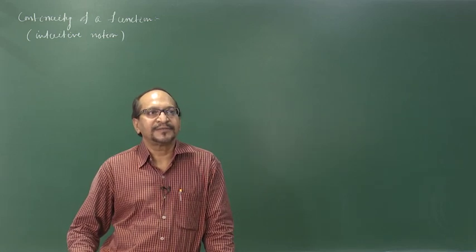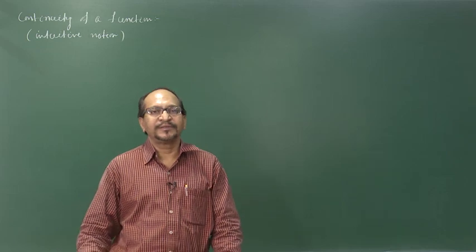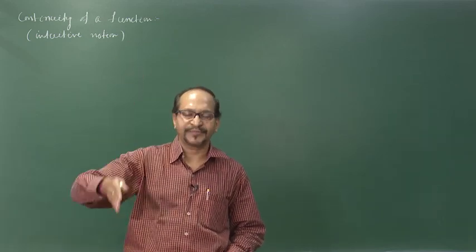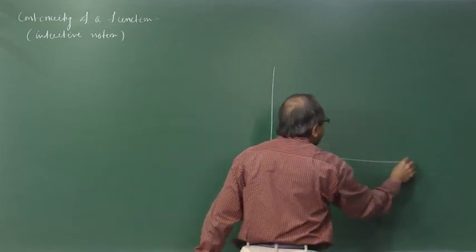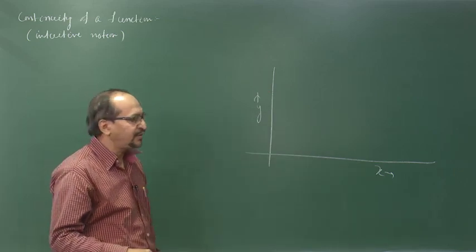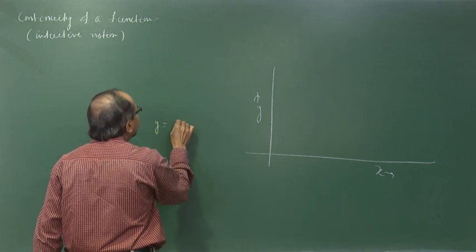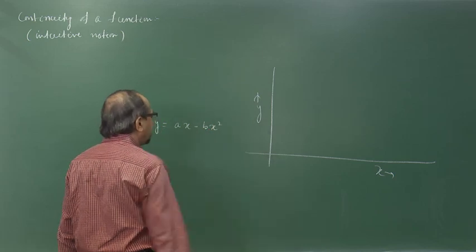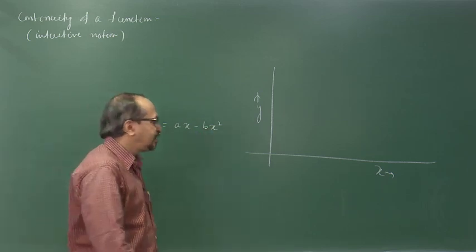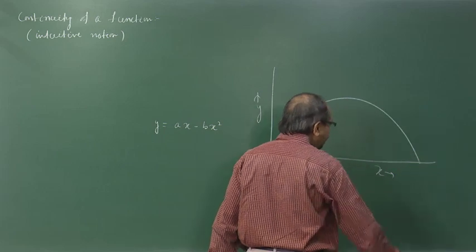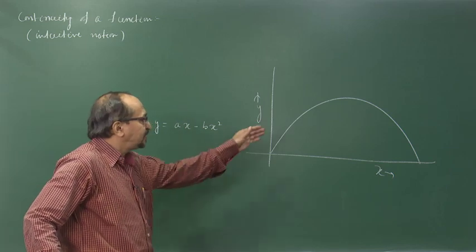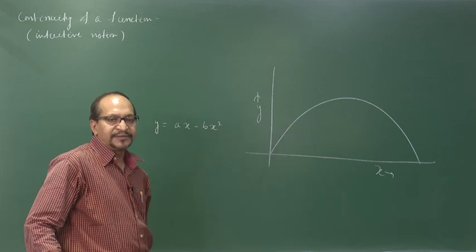From a physics point of view, let us give an example. Suppose we throw a projectile in space, constrained to move on a plane. If we draw its trajectory, it is a function of x and y, where y is the vertical coordinate and x is the horizontal coordinate. You know from twelfth standard that the relationship between y and x for a projectile trajectory is y = ax minus bx squared. So the path is a parabola.